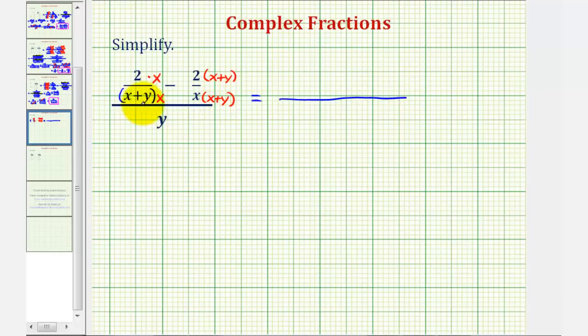So notice how on top, we have a common denominator of x times the quantity x plus y. And now we can combine the numerators. This first numerator is two x, and then we'd have minus two times the quantity x plus y.